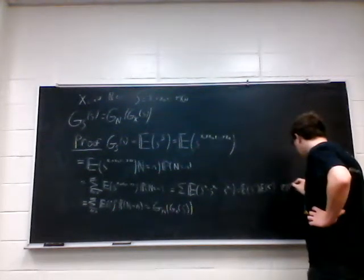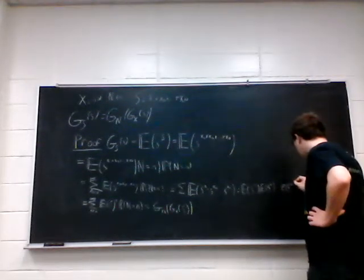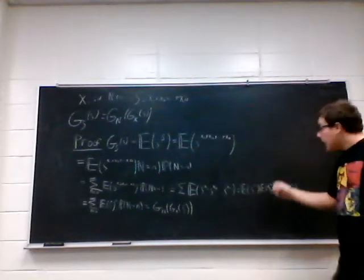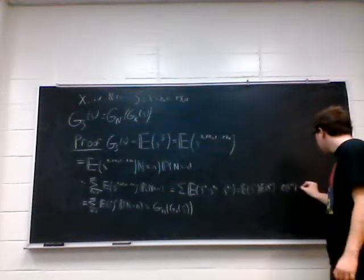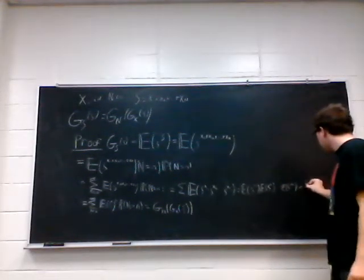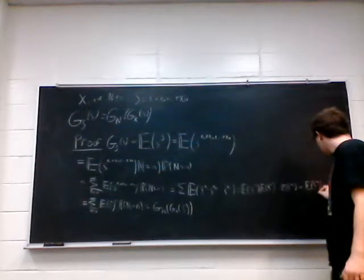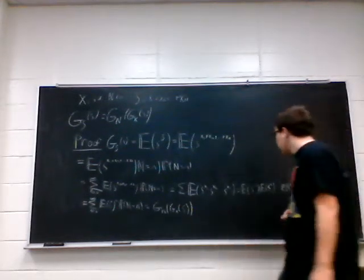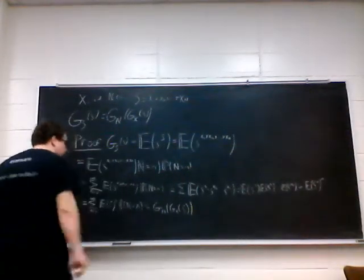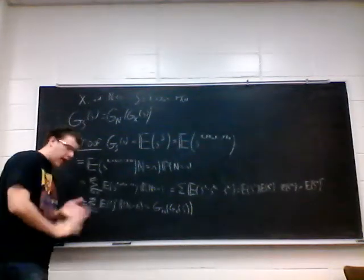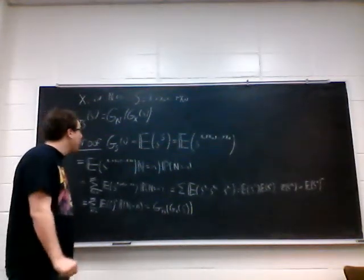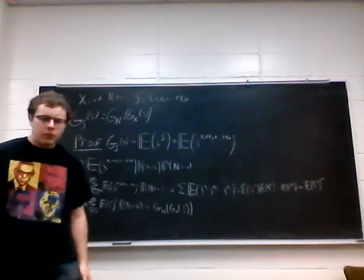They're all identically distributed, so it's just the expected value of s to the x, to the n. That's how we got from this step to this step. That's that theorem — probably the hardest theorem in my opinion for the exam.